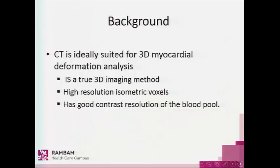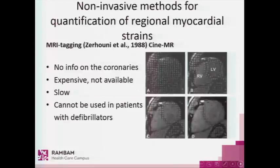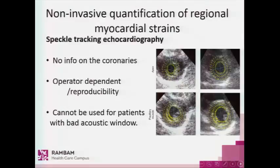CT is ideally suited for three-dimensional myocardial deformation analysis of strain because it's a true 3D imaging method. It has high resolution of isometric voxels and good contrast resolution of the blood pool. Other methods for non-invasive quantification of myocardial strain include MRI tagging with its disadvantages, and the more often used speckle tracking echocardiography, which doesn't give us any information about coronaries and is very operator-dependent.